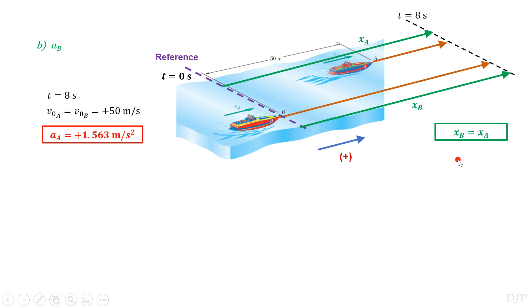This equation now will serve as a way to relate the two motions. For boat A, we can get the final position by using the third kinematic formula. By substituting the known values, we get that x sub A is equal to positive 500 meters, which is equal to x sub B.